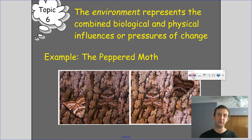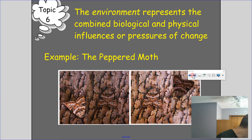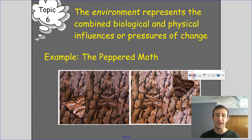The environment represents the combined biological and physical influences or pressures of change. A great example is the peppered moth — we're going to do a worksheet and online activity on this. Basically, there were coal-burning power plants changing the color of bark in an area — I think it was in the UK — and the moths were white, making them easy prey for birds against the dark wood.